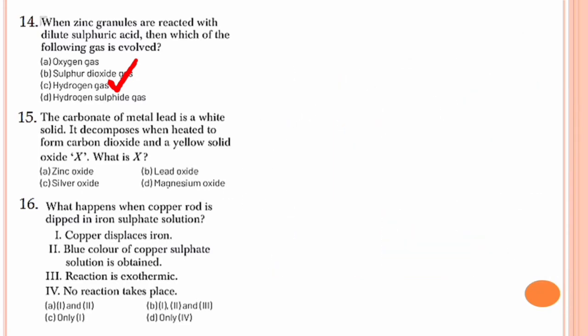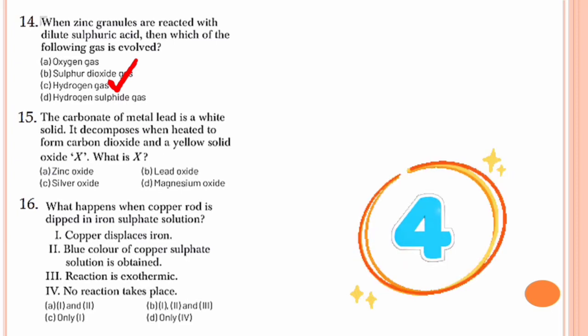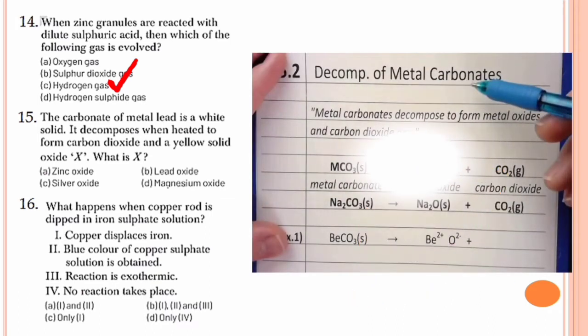Question number 15. The carbonate of metal lead is a white solid. It decomposes when heated to form carbon dioxide and a yellow solid oxide X. What is X? Recall the decomposition of metal carbonates — when heated, they form metal oxides and carbon dioxide. So if the metal carbonate is lead carbonate, then the oxide will be lead oxide. Hence the option is option B.